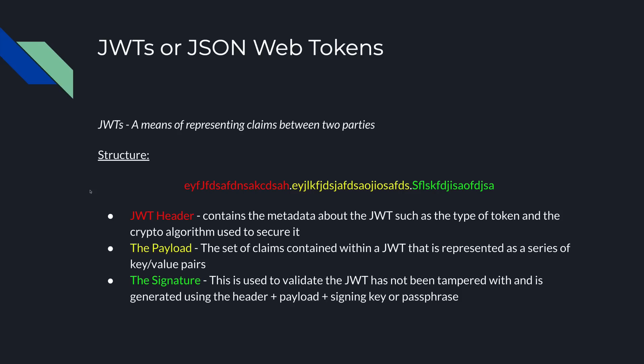Before we dive into the code editor, let's quickly cover what JSON Web Tokens are and how we can use them within our application development. JWTs or JSON Web Tokens are a means of representing claims between two distinct parties. Say I had a front-end application written in React.js and I wanted to talk to a back-end application written in Node.js — if my front-end had a valid JSON Web Token within an authorization header, it can send a request to the back-end server, which will validate that the header exists and the token is valid, then return the requested information.